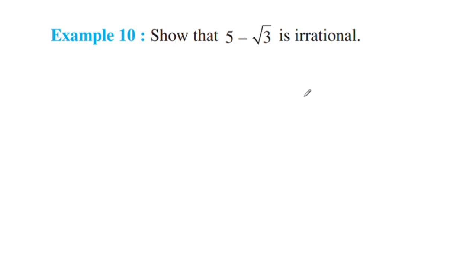The key property we use is: the sum or difference of a rational number and an irrational number is always irrational. Here, 5 is a rational number and root 3 is an irrational number.